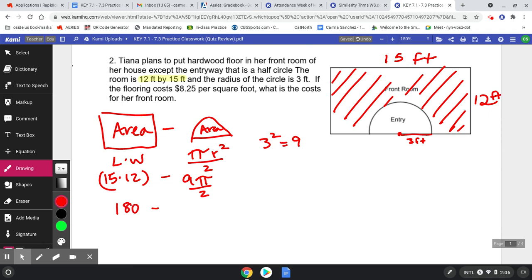We would say that 15 times 12 is 180, and then on my calculator - remember you can turn your phone calculator to the side - and you can do nine times pi and then divide that by two, and I'm getting an estimation of 18.85 for the nine pi divided by two. And so 180 minus that is going to give me 161.15 square feet.